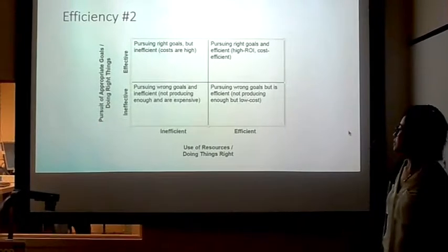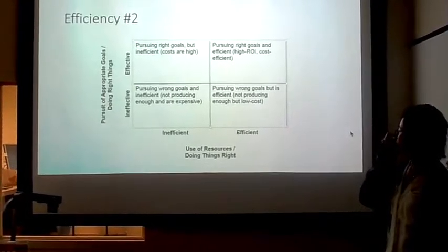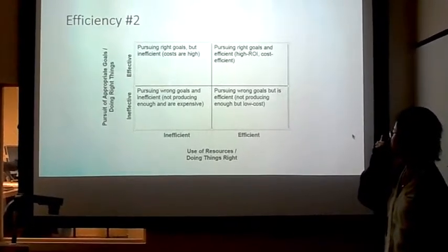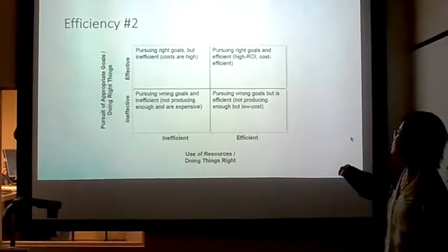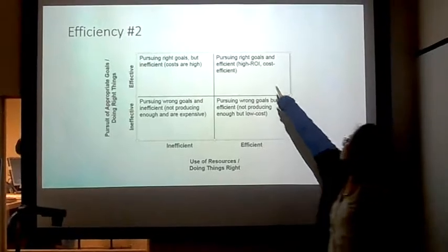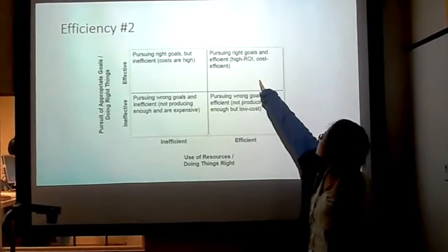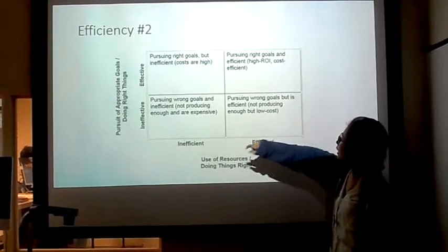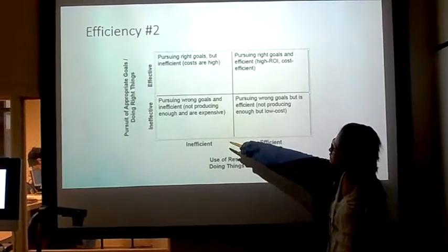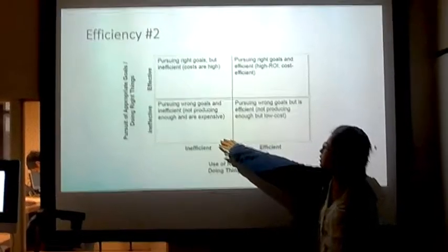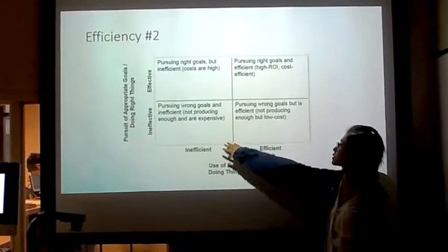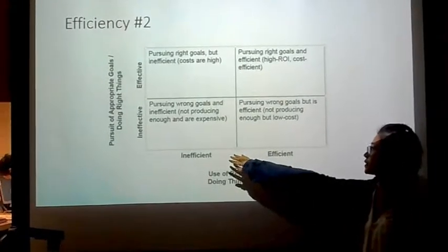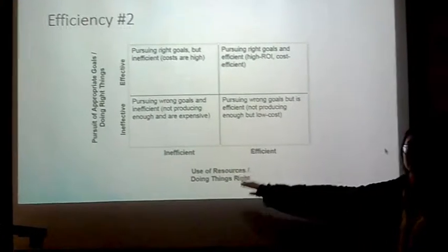Another example for clarification: being effective and efficient means pursuing the right goals in a cost-efficient way. Ineffective and inefficient would be pursuing wrong goals and not producing enough while being expensive.